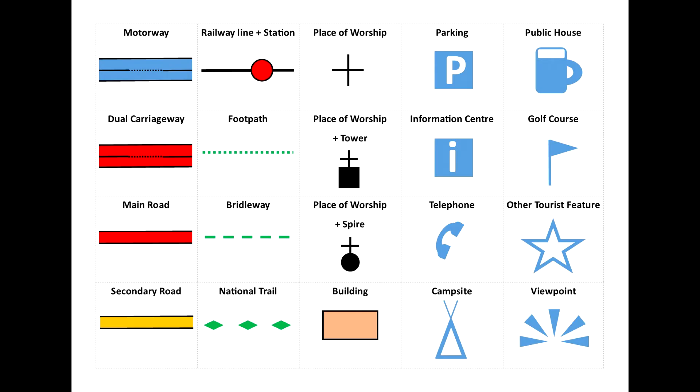The next thing is the key, and the key is really important for checking and referring to when you're looking at the different symbols that you find in an Ordnance Survey map.